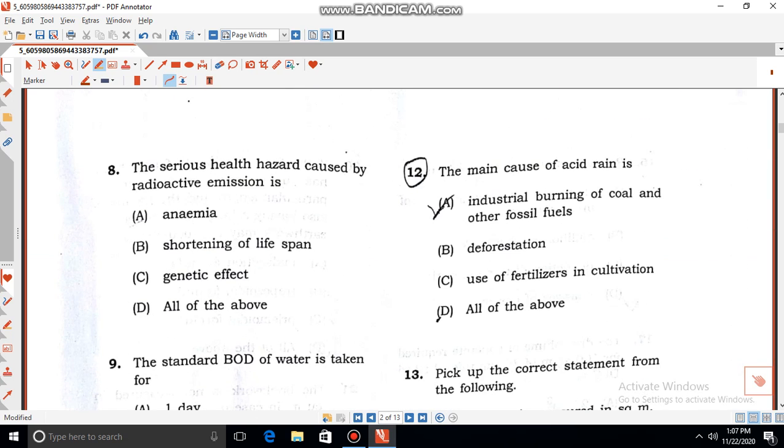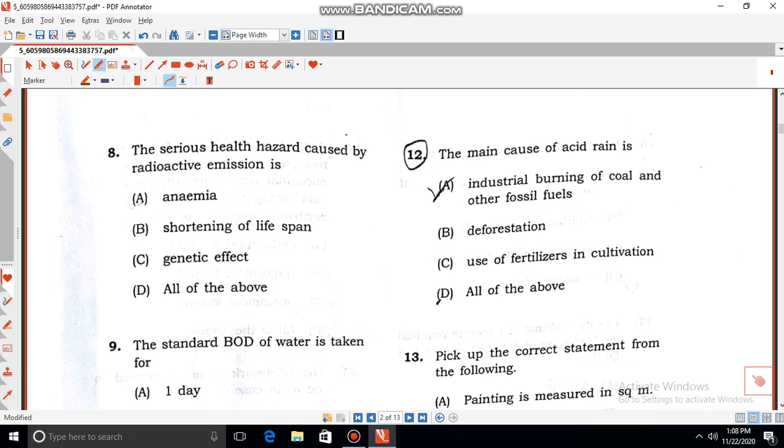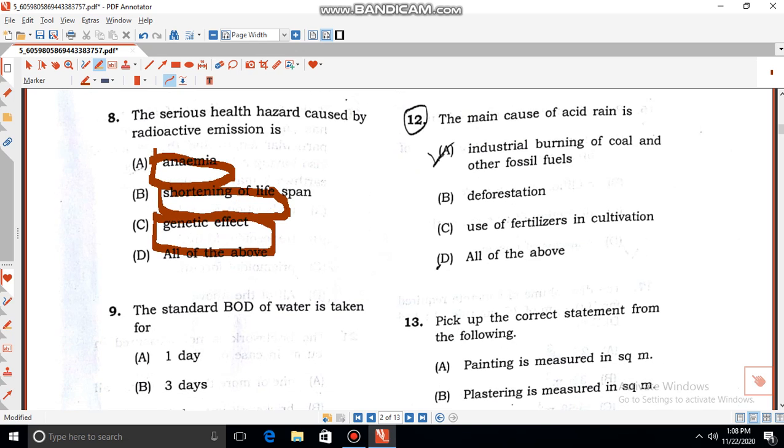Then, the serious health hazard caused by radioactive emissions. The radioactive emission causes anemia and diseases, and life span is short. This is the genetic effect. So our correct answer is all of the above.